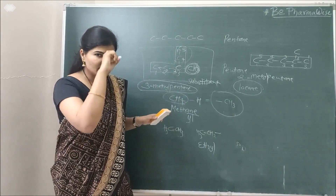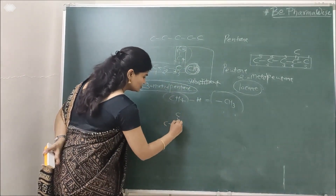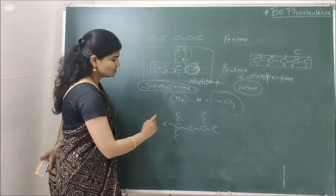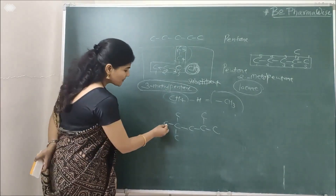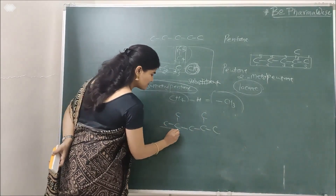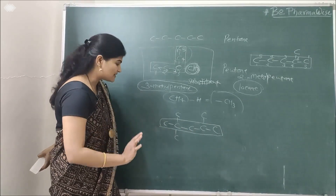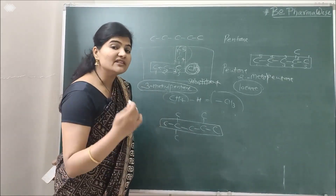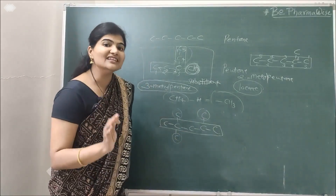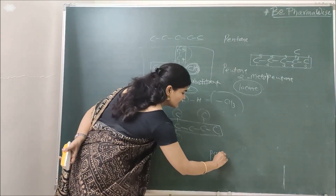Let's take another example. In a structure with 8 drawn segments, the longest continuous chain has 5 carbon atoms — so the parent is pentane. There are 3 methyl substituents on this chain. For the numbering direction: from the left the substituents get locants 2, 2, and 4; from the right they get 2, 4, and 4. We prefer the set where the sum of locants is minimum: 2+2+4=8 versus 2+4+4=10. So we number from the left.